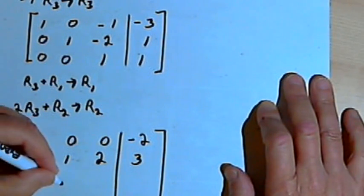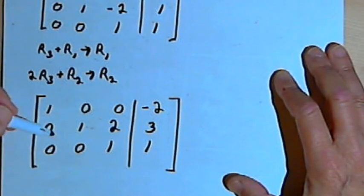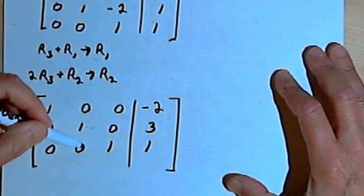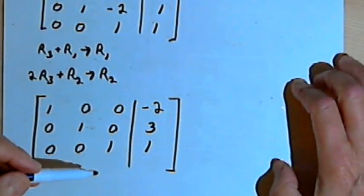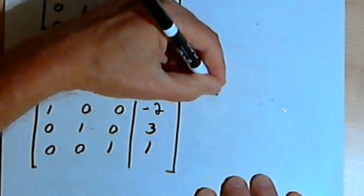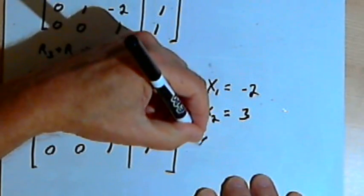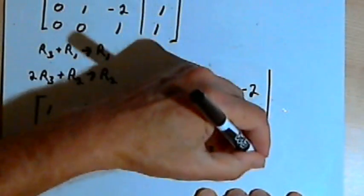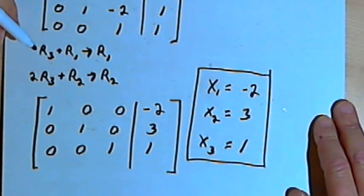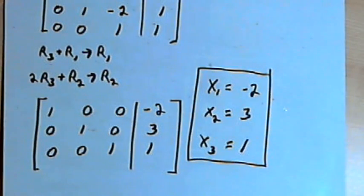The left side of my augmented matrix is now in reduced row echelon form, which means the right side of the matrix gives the solutions to my original equations. That means x₁ equals negative 2, x₂ equals 3, and x₃ equals 1. Whenever you do something like this, there are obviously a lot of steps and a lot of places to make mistakes. The best advice I have is do a lot of practice, check yourself as you go along, and be very, very careful.